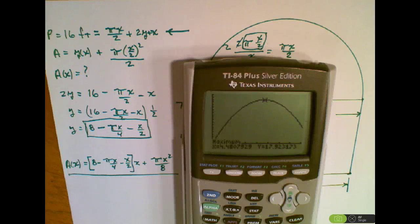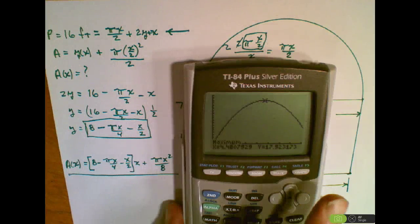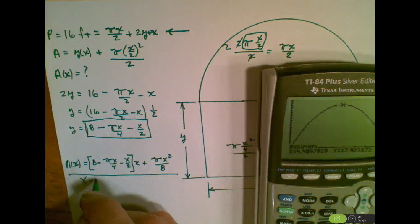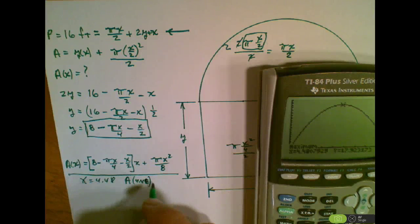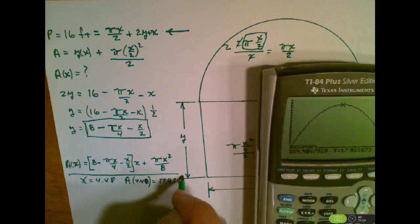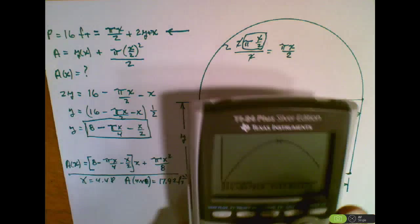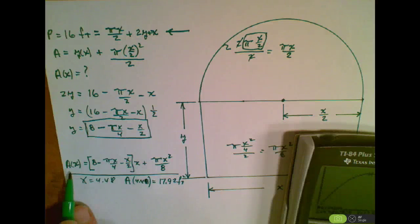I have a maximum now at 4.48 feet. So when x is equal to 4.48, my area will be at maximum. I will get a maximum area of my window at 17.92 feet squared. Remember, that's what our equation gives us. Our equation gives us the area, and we'll get a maximum of that at 4.48. Hopefully this has been helpful with this problem. Good luck.